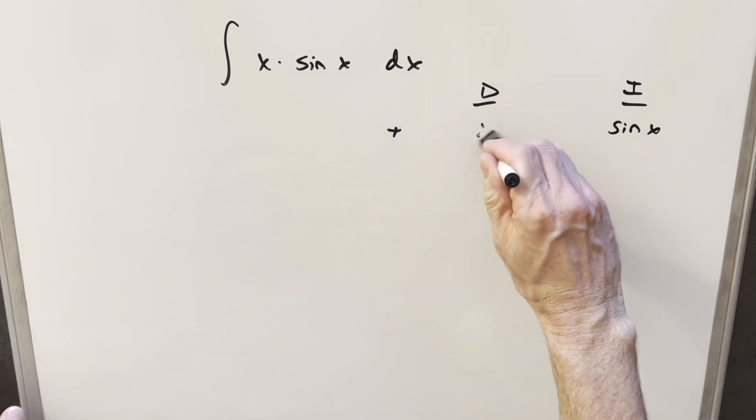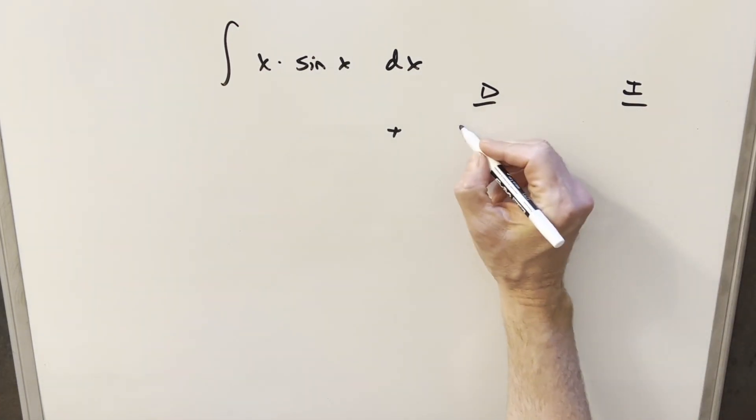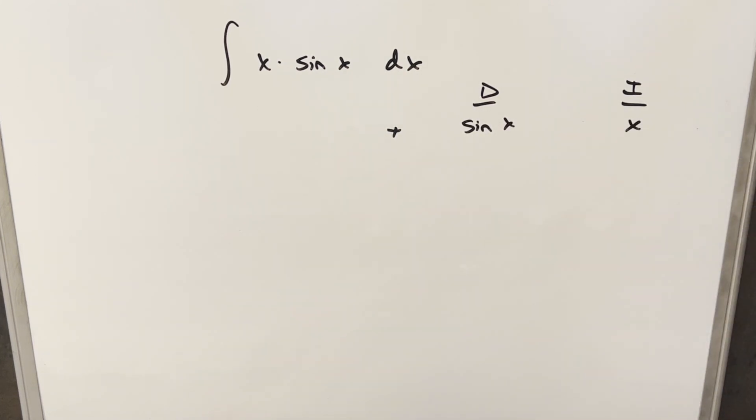What I want to do instead today is make it harder on ourselves and switch these. Instead of differentiating x, we'll differentiate sine x and we'll integrate x. Along the left here, we're going to want to alternate signs, but I'm going to do a lot of rows because we want to see this pattern.